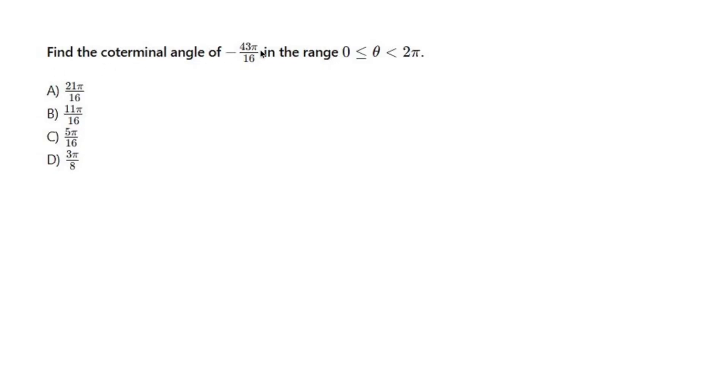Find the coterminal angle of negative 43 pi over 16 in the range 0 to 2 pi. So a coterminal angle, or a regular angle for that matter, is going to be something that lives in between 0 and 2 pi.